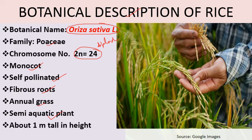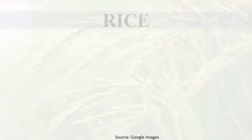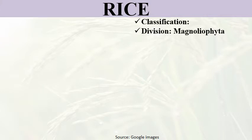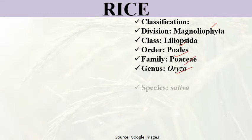Rice can grow up to a height of one meter, though some varieties can exceed this. Regarding its classification: it belongs to division Magnoliophyta, class Liliopsida, order Poales, family Poaceae, genus Oryza, species sativa. This is the full classification of rice.